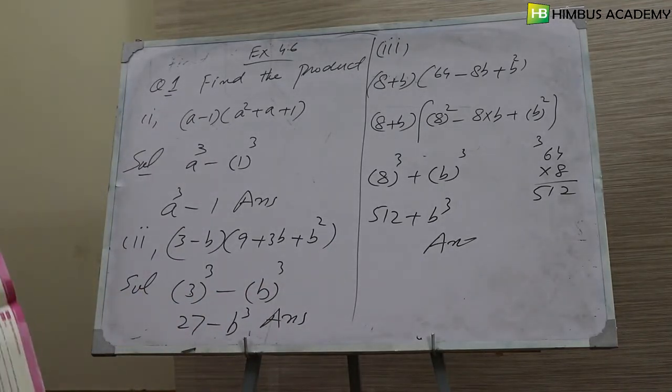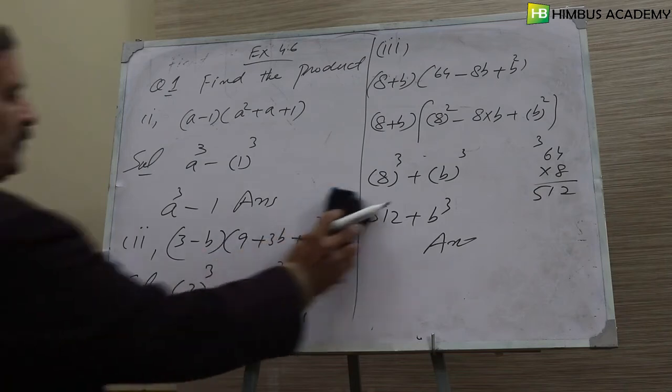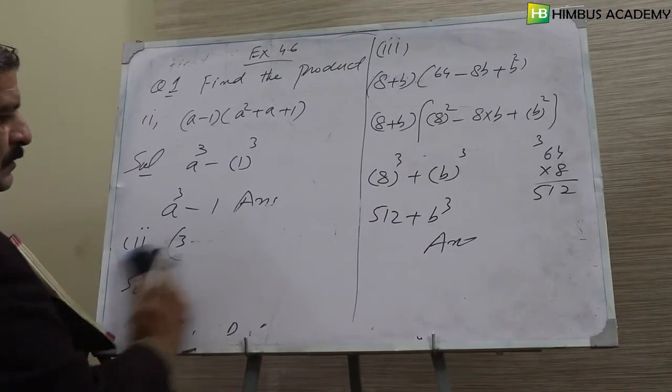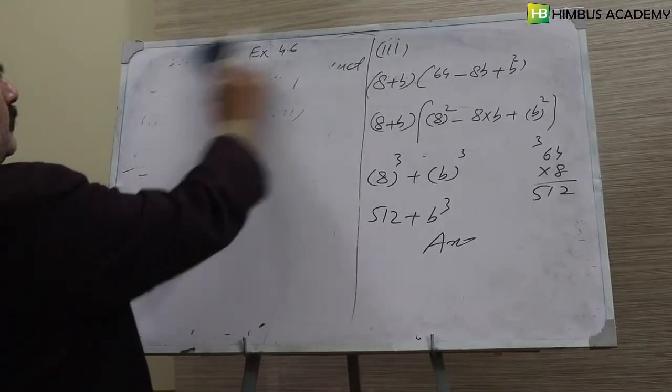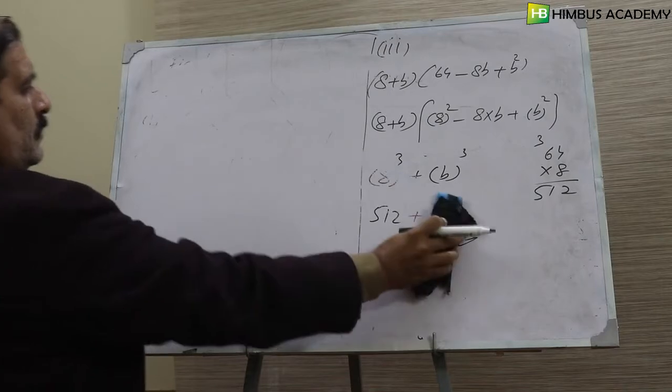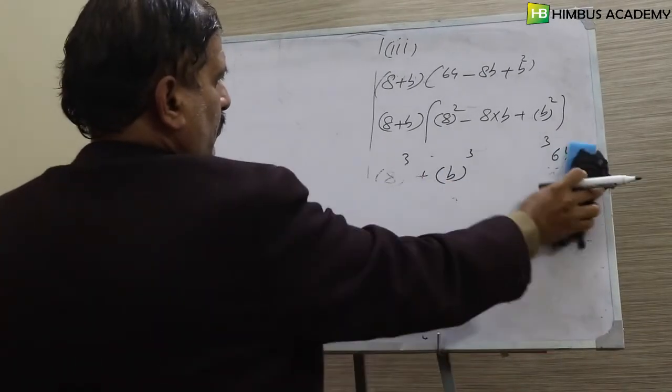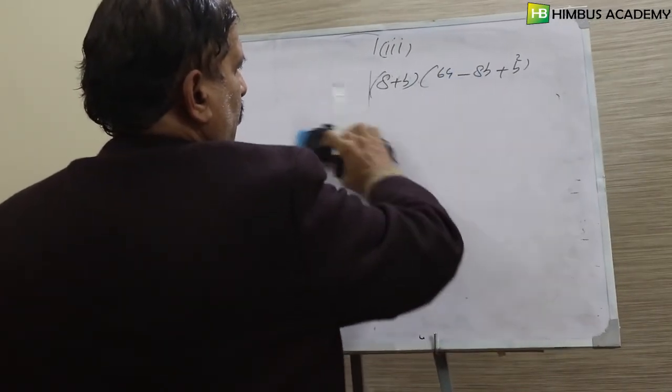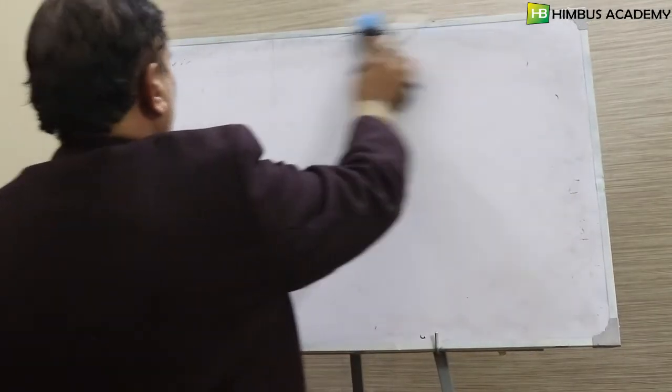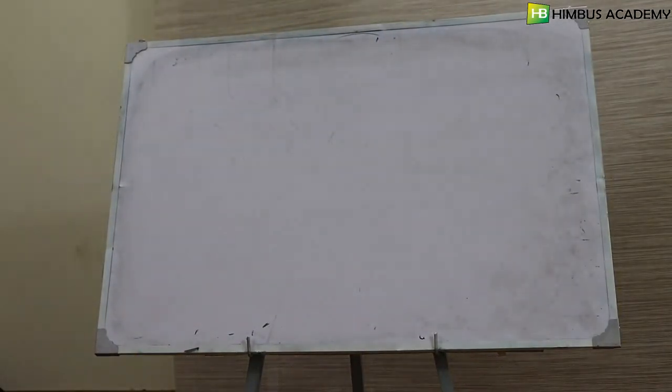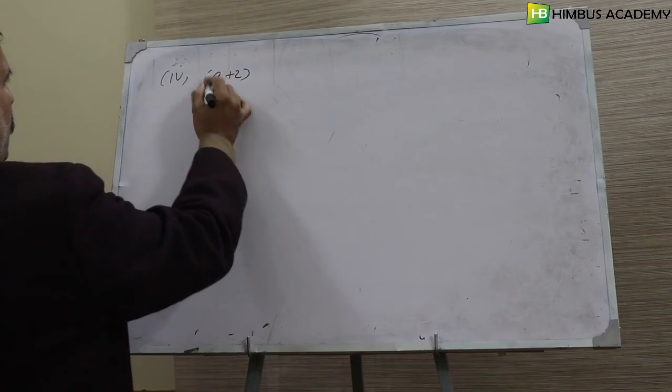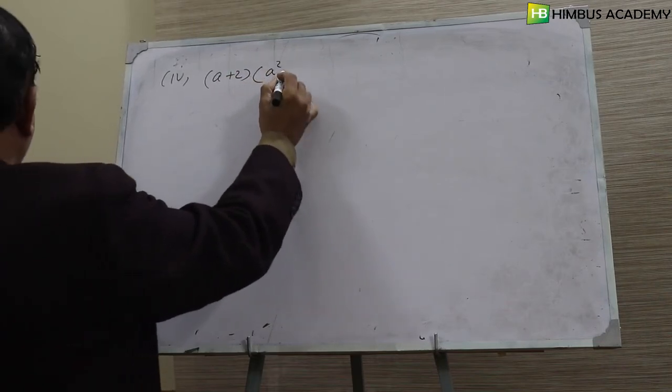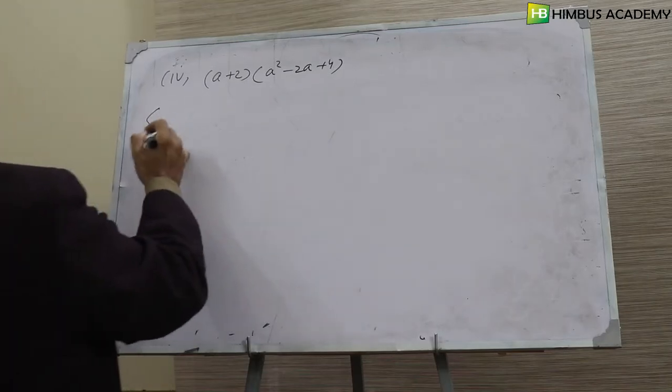The 4th part: A plus 2, A square minus 2A plus 4.